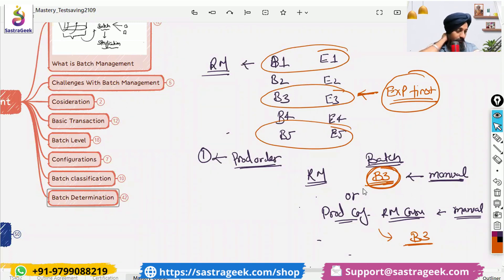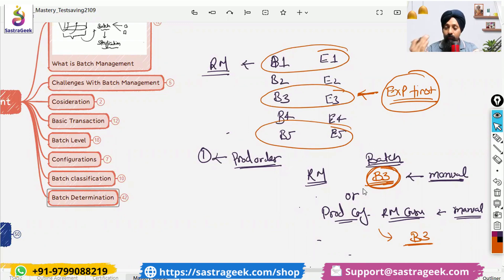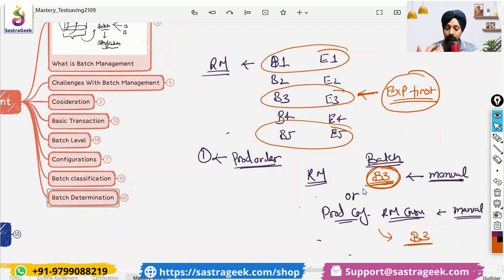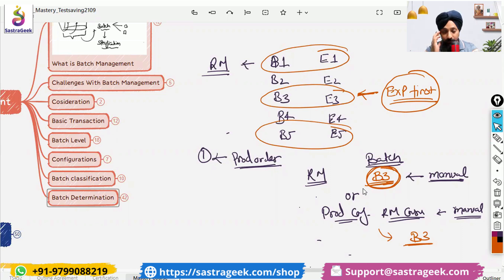This can also apply when you are transferring material from one storage location to another — from your store to production. For that transfer, you also want the material which is going to expire first in your store to be quickly transferred to production so it can be consumed. In that case you will also require batch determination in the MEGO transaction.